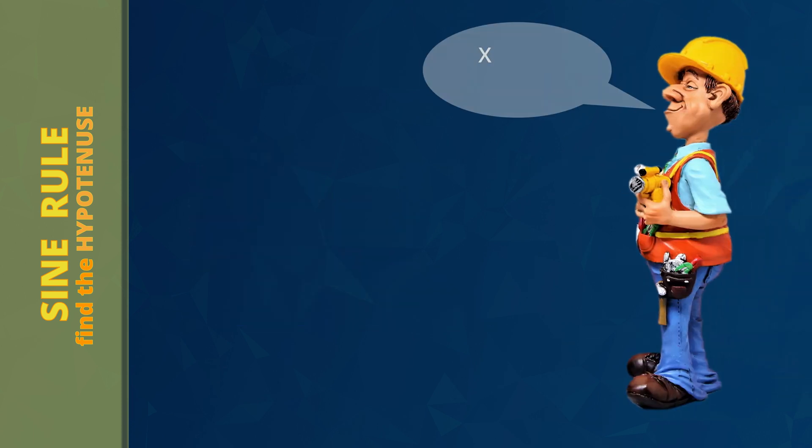Remember the trick: when X is down on the bottom of the fraction, you divide in the next line. D for down, D for divide.